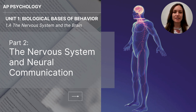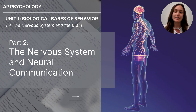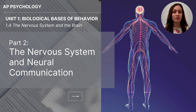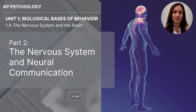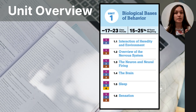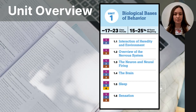Hi everyone, my name is Julie McCrary and this particular video is for AP Psychology students. It is part two of the Biological Basis of Behavior unit and focuses on the nervous system and neural communication. This video falls under topics 1.2 and 1.3 and covers the overview of the nervous system, the neuron, and neural firing.